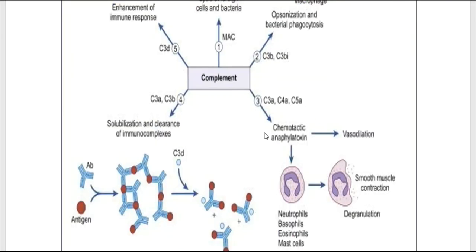For chemotaxis: complement fragments attract neutrophils and macrophages to the area where the antigen is present. These cells have surface receptors for complements like C5a and C3a, and thus move toward the site of inflammation by the process called chemotaxis.